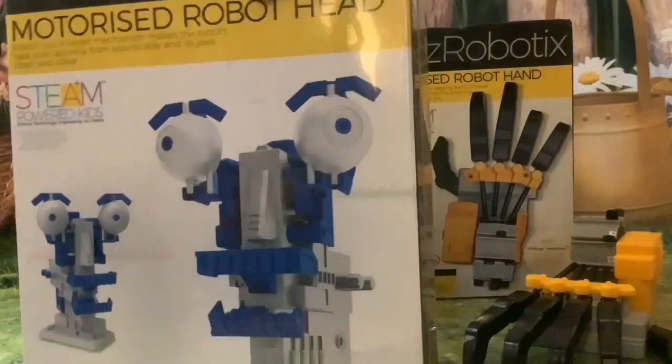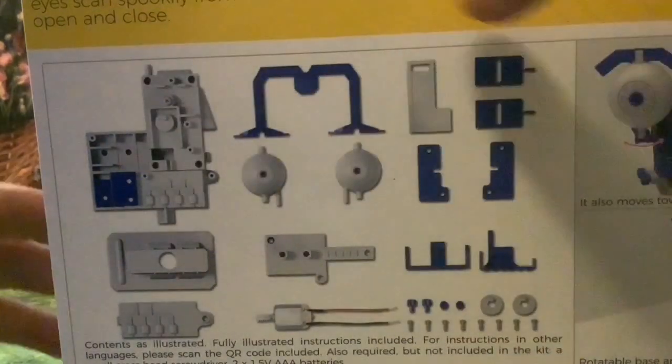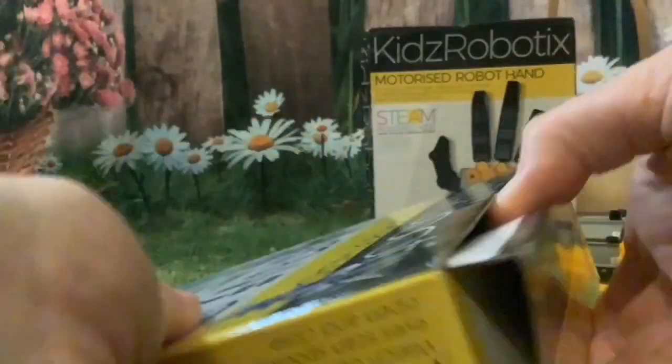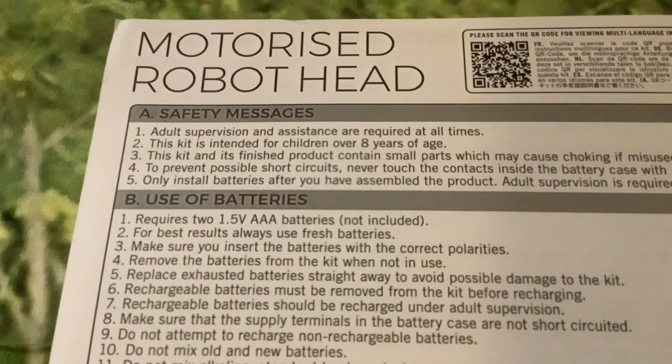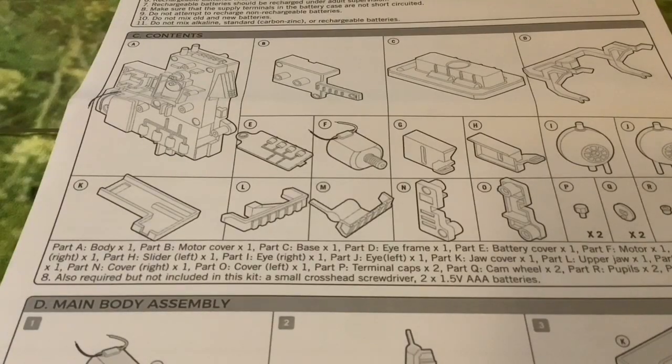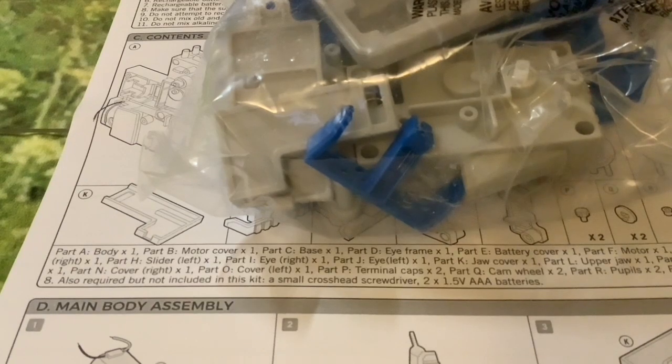So will this robot head be as good? We'll have to open it up and see. I noticed that this one's actually got the different components that are included on the back of the box. Here are our instructions. It's got the same safety messages as we got on the motorized robot hand about adult supervision and assistance being required at all times, and then we've got a list of the contents.